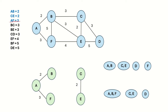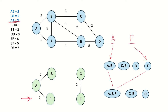We go to the next edge, AF. We check the representative sets of vertices A and F. A is represented by one set and F is represented by another. They are disjoint sets, so we can add edge AF to the MST. We then take a union of these two sets, so now A, B, and F are all in one set.